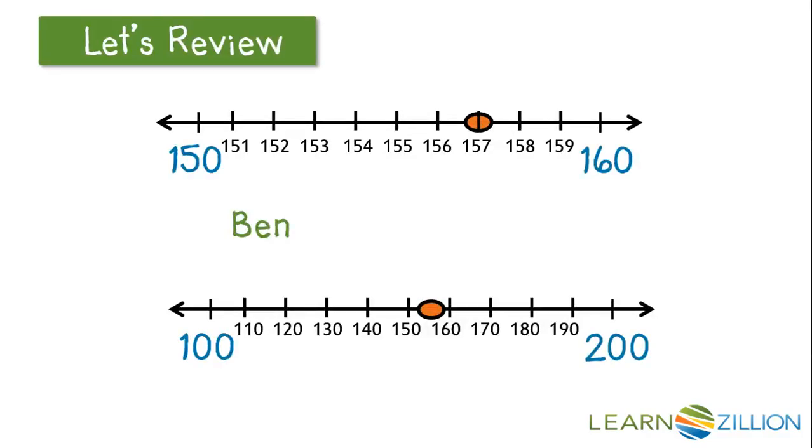First, let's review. A benchmark number is the number that lies on either side of a given number. On the top number line, 150 and 160 are the benchmark numbers for 157 when we count by 10s. 157 is in between these two numbers. If we count by 100s, the benchmark numbers for 157 are 100 and 200.